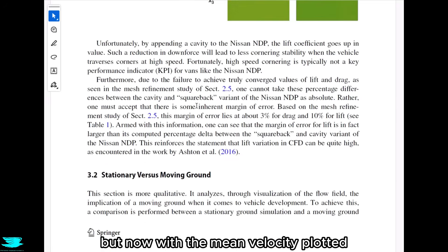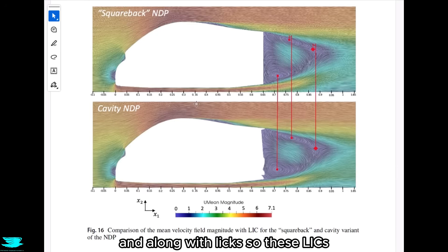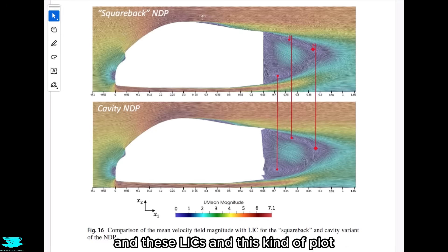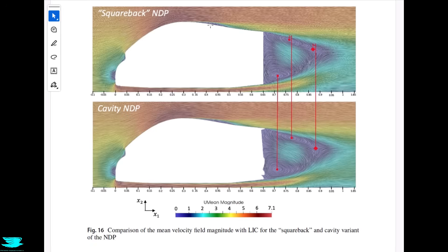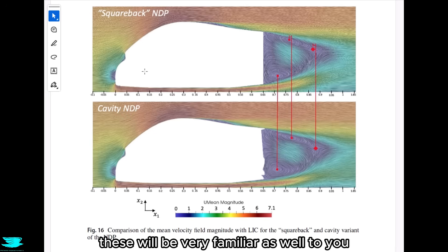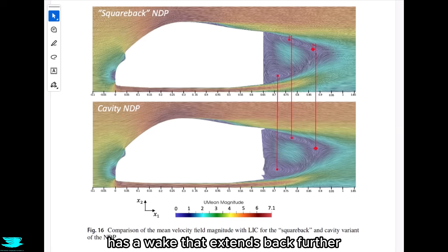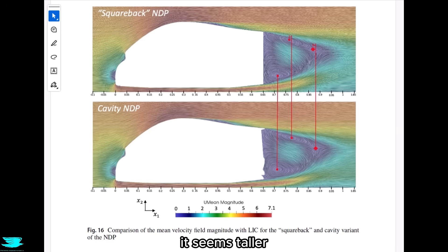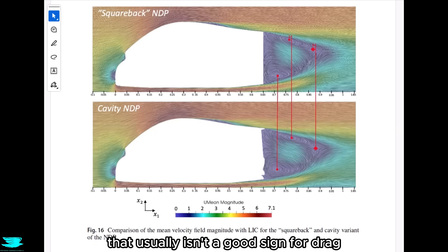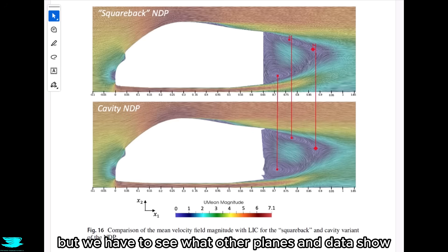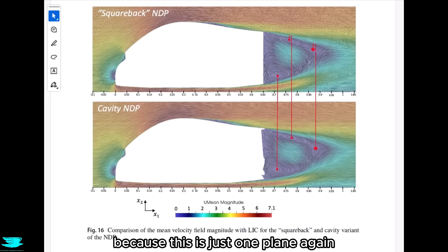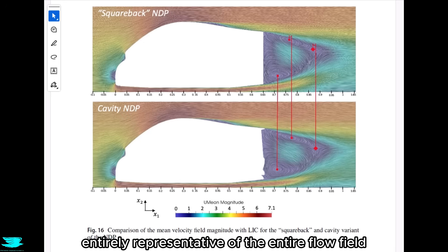In figure 16, we see the same center plane but now with mean velocity plotted, along with streamlines showing where the flow is going. The top is for the regular car, the bottom for the car with extensions. Red lines show differences in wake feature locations. The car with extensions has a wake that extends back further and also seems wider and taller — the wake appears to blow down more. A larger wake usually suggests more drag, but this is just one plane, and we need other data to draw broader conclusions.